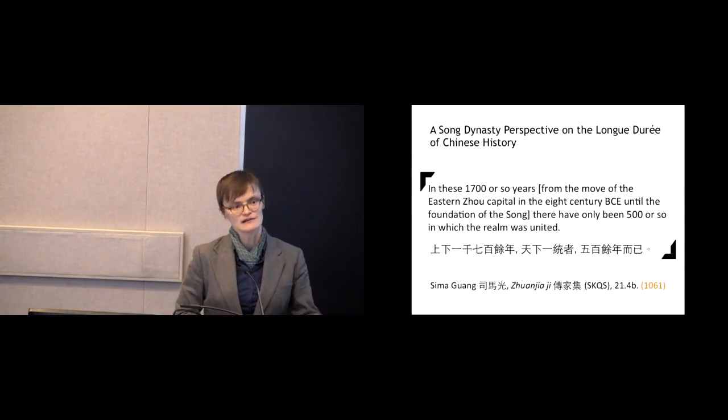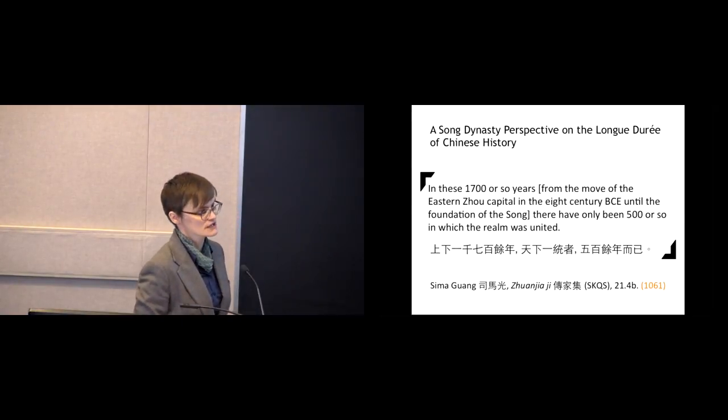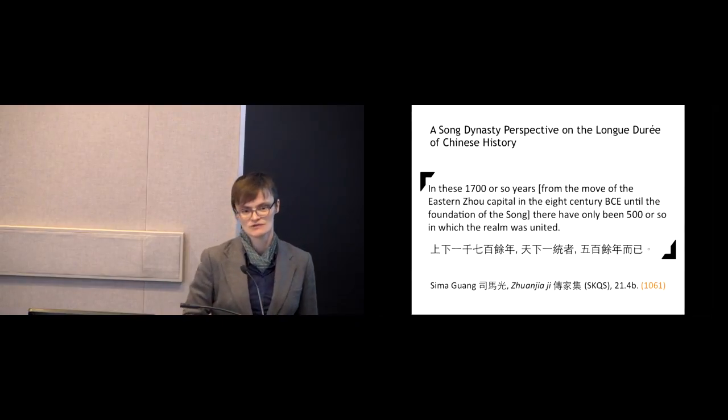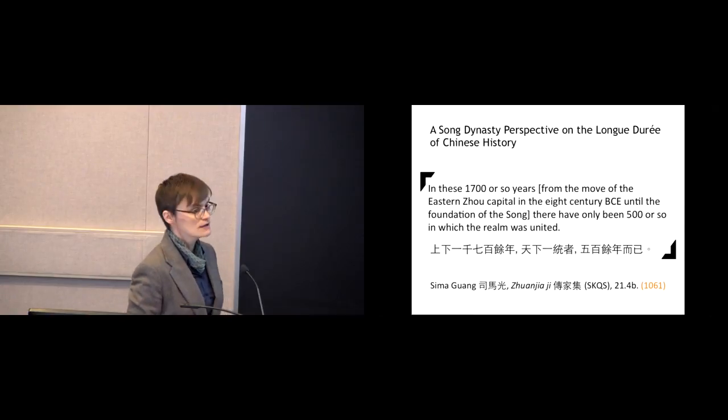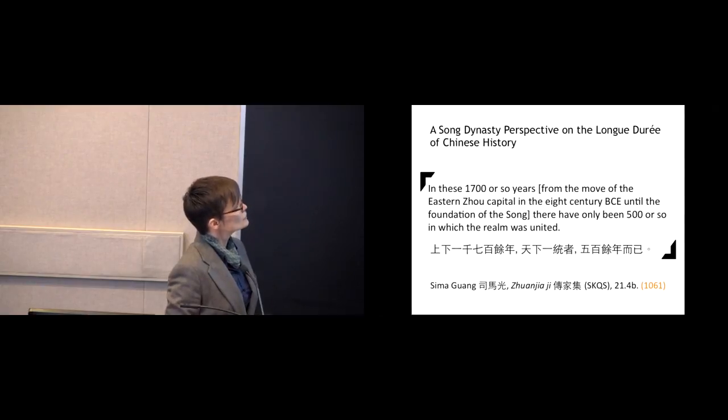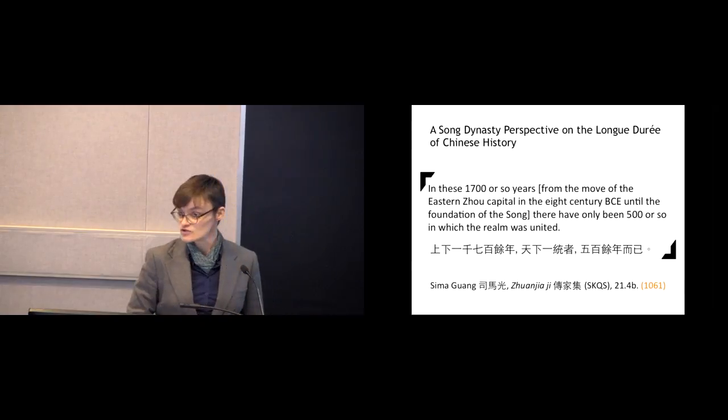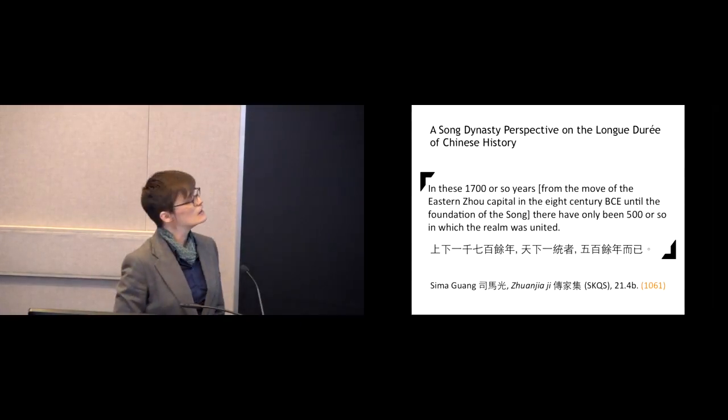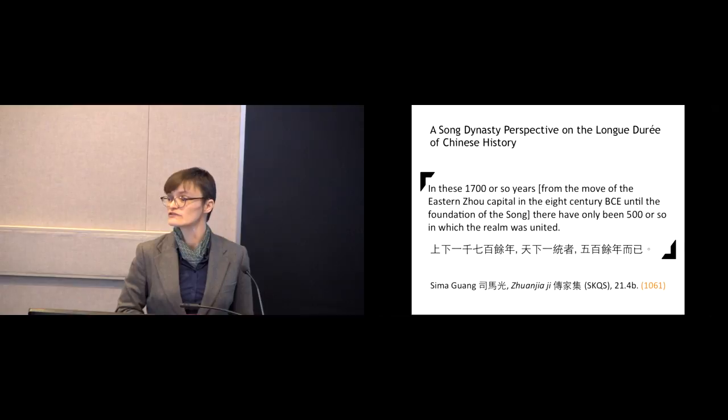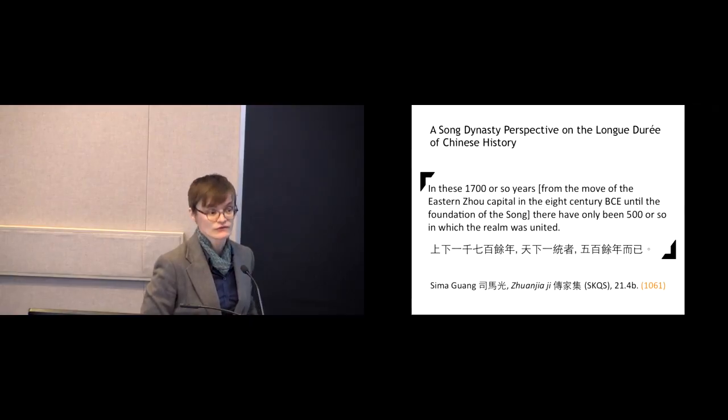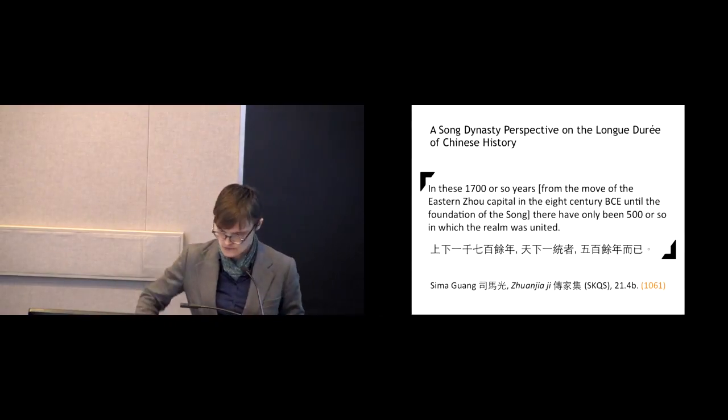He says, in these 1700 or so years, from the move of the Eastern Zhou capital in the 8th century BCE until the foundation of the Song, there have only been 500 years or so in which the realm was united. And I think here he raises a question that's still important for all of us in pre-20th century history to deal with. How come that up until, I would say, the reunification under the Yuan, moments of multi-state rule dominated in Chinese history? That's perhaps not the picture that we get when we read survey histories, but it certainly is the case. That changes. It changes from the imposition of the Yuan rule onwards. There are a variety of reasons for this, certainly institutional reasons, having to do with how the Mongols set up their empire and how the early Ming continued those institutions.